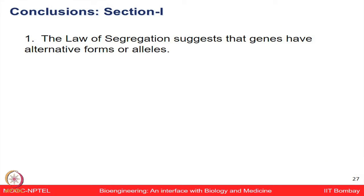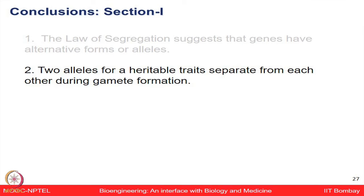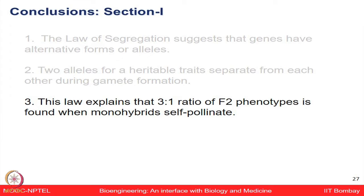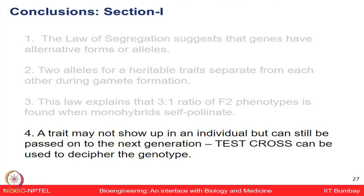From this section, we conclude that the law of segregation states genes have alternative forms (alleles). There are two alleles for a given heritable trait that separate during gamete formation. The ratio is approximately 3:1, and a trait may not show up in an individual but can still be passed to the next generation — as revealed by the test cross.